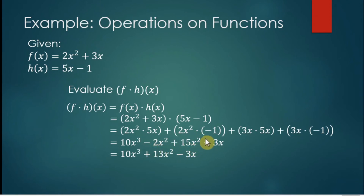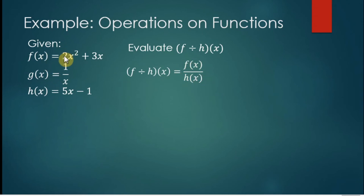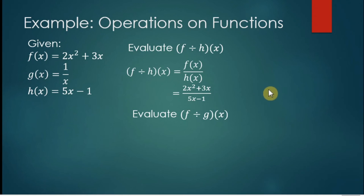Another example: let us compute f divided by h. By definition, f divided by h of x means we take f of x — that's 2x squared plus 3x — as the numerator and h of x — that is 5x minus 1 — as the divisor. Since we cannot simplify this any further, our final answer is 2x squared plus 3x all over 5x minus 1.